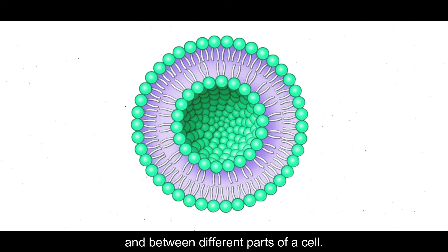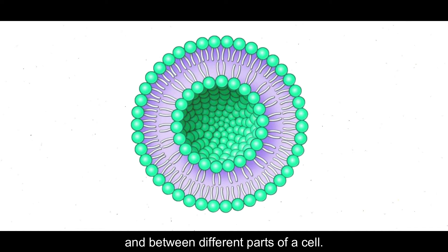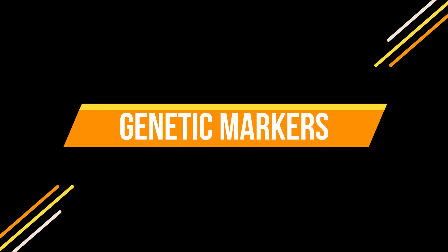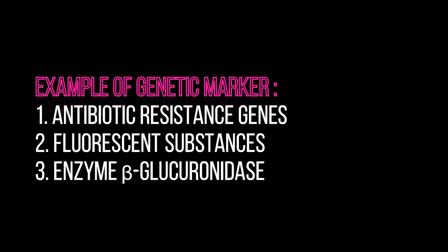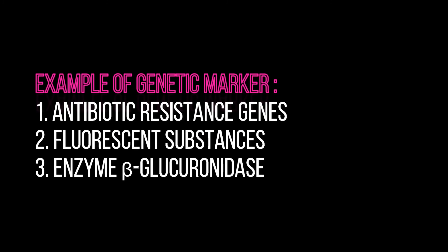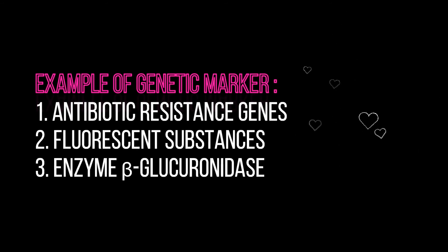The fourth tool is genetic markers. A genetic marker is a gene used to determine if a nucleic acid sequence has been successfully inserted into an organism's DNA. Examples of genetic markers include: first, antibiotic resistance genes; second, fluorescent substances; and third, the enzyme beta-glucuronidase.